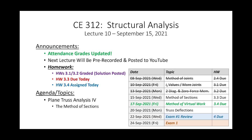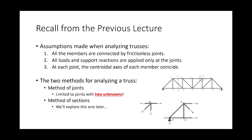Today we're going to talk about the method of sections. Recall the method of joints — in my opinion it's the simplest approach, though it may be the most tedious. Our assumptions: all members are connected by frictionless joints, all loads and support reactions are applied at the joints, and the centroidal axes coincide. One disadvantage of the method of joints is that it's limited to joints with at most two unknowns.